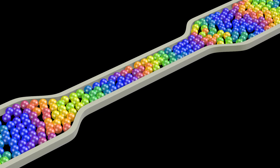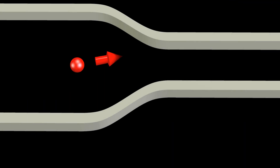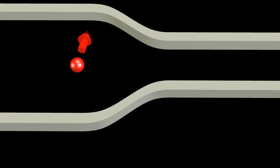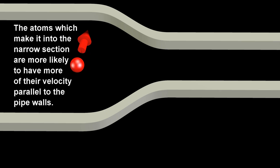So, what is actually happening? An atom is more likely to enter the narrow section of the pipe if it has a larger component of its velocity parallel to the pipe walls. If the atom has a larger component of its velocity perpendicular to the pipe walls, the atom is more likely to bounce back. The atoms which make it into the narrow section are more likely to have more of their velocity parallel to the pipe walls.